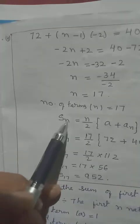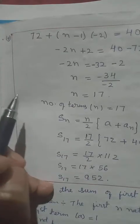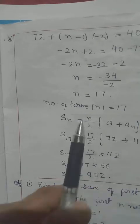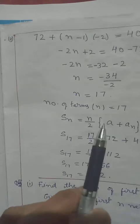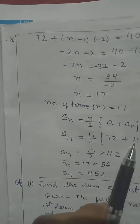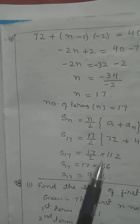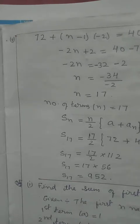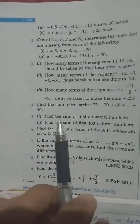Now that N = 17, we find S_N using the second formula since we know the last term: S_N = N/2 × (A + A_N) = 17/2 × (72 + 40) = 17/2 × 112. Since 112 divided by 2 is 56, we get 56 × 17 = 952.